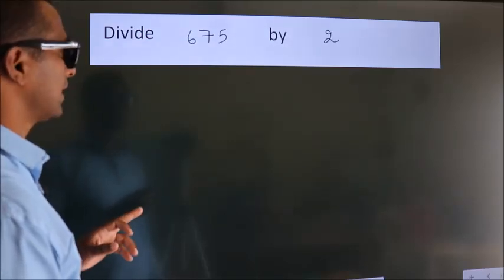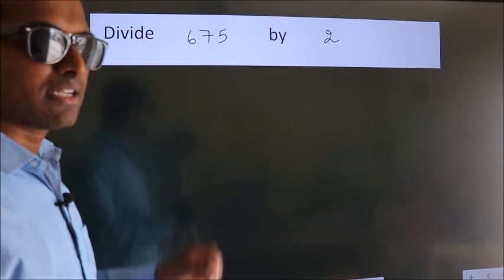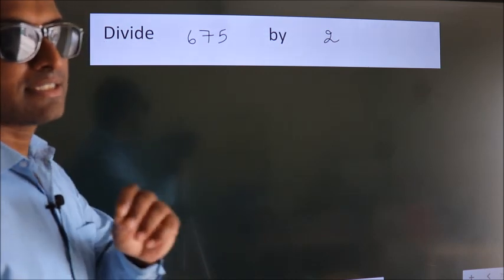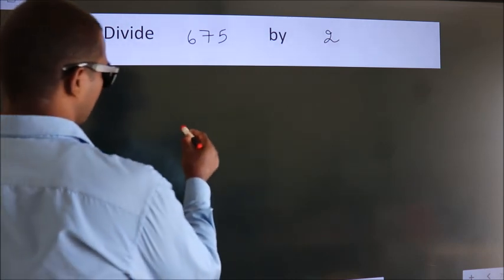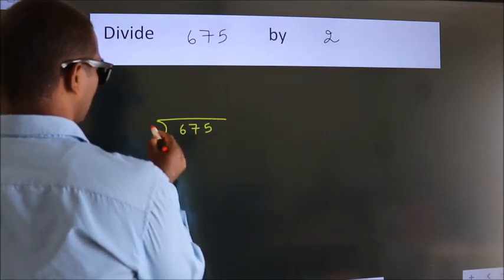Divide 675 by 2. To do this division, we should frame it in this way. 675 here, 2 here.